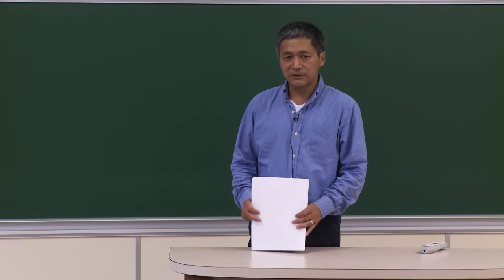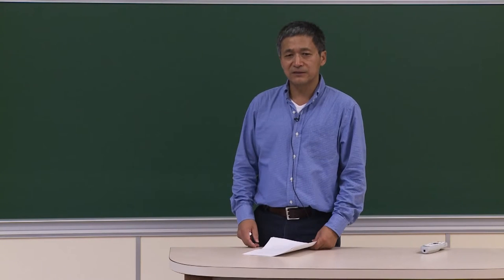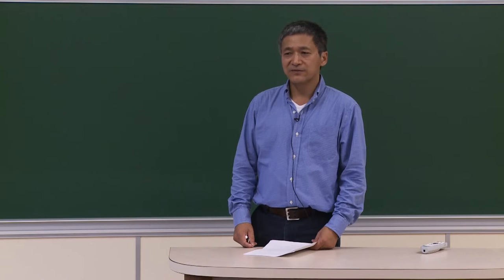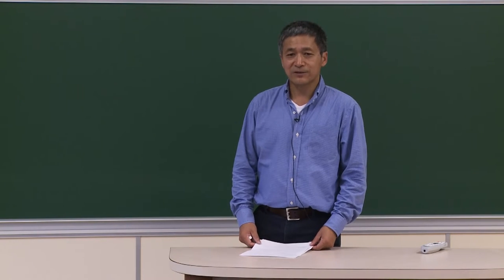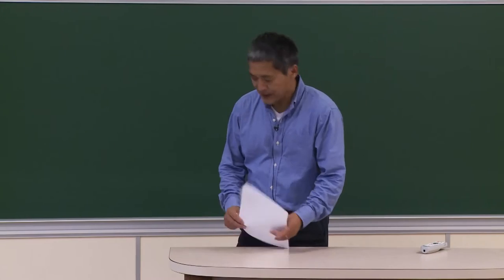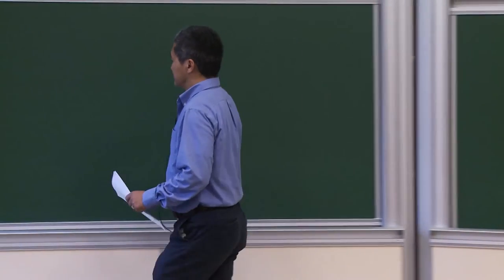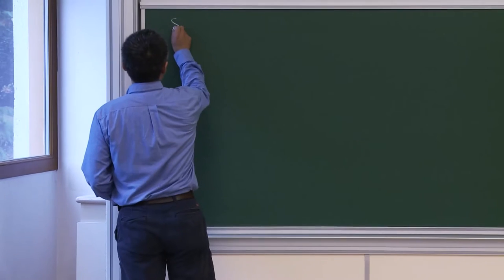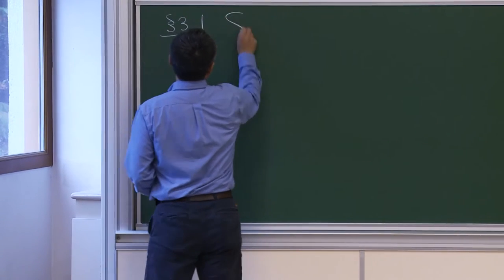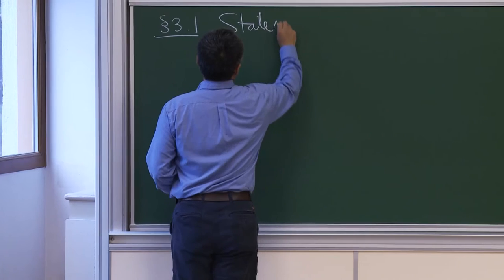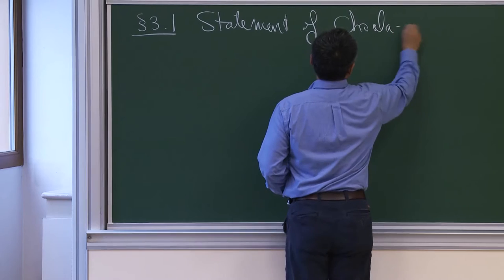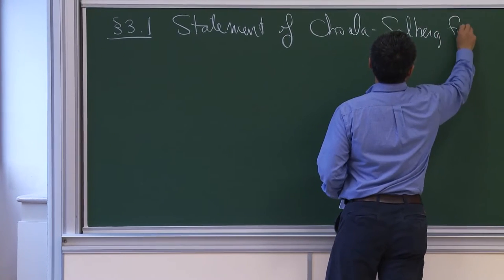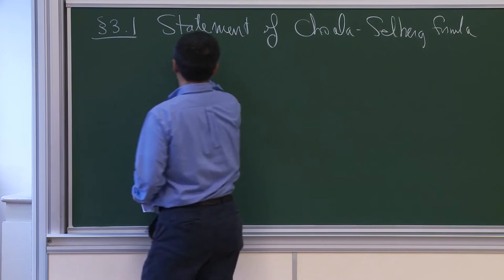The most important difficulty when you prove the Gross-Zagier formula is the self-intersection. When you have a self-intersection and you don't have modular forms, you have to figure out what to do. Now let me talk about the statement of the Chowla-Selberg formula on Shimura curves.